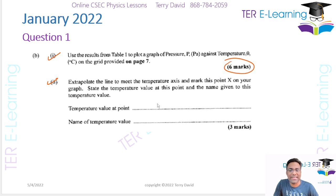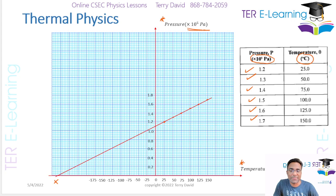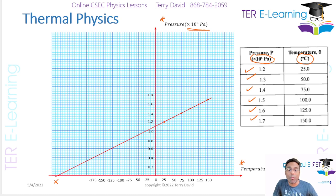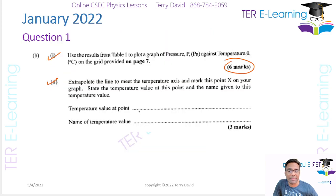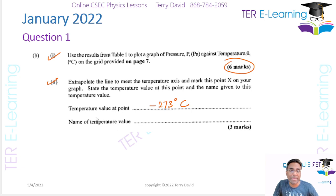They said state the temperature value at this point and the name given to this temperature value. This particular experiment has to do with the pressure law. When you extrapolate your graph, that graph when extrapolated goes to a temperature of minus 273 degrees Celsius - that is what we should get when we extrapolate the graph. They also want to know the name of this temperature value: it is what we call absolute zero.